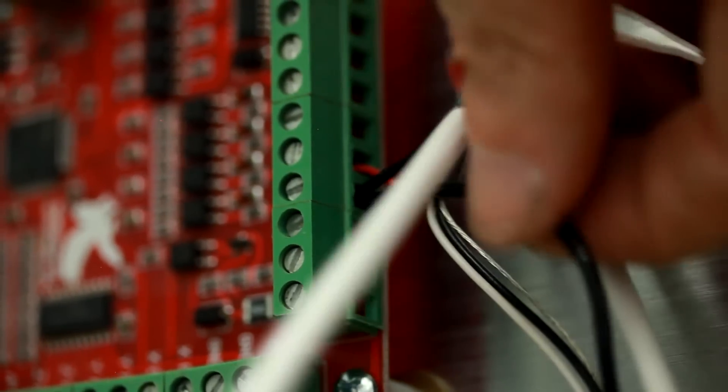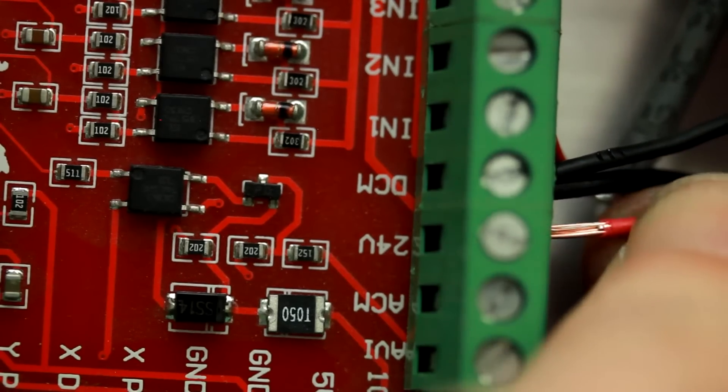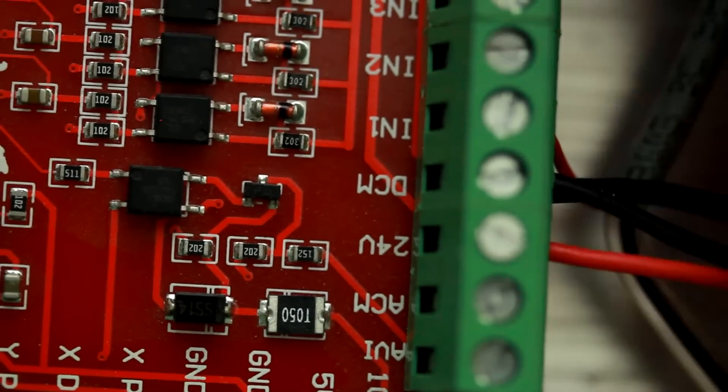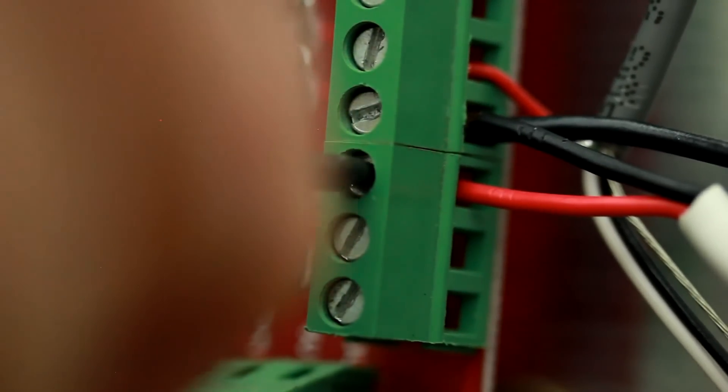The black wire of this cable is connected to the DCM, the DC common terminal, and the red wire is connected to the 24V, 24 volts terminal on the Mach 3 USB controller.